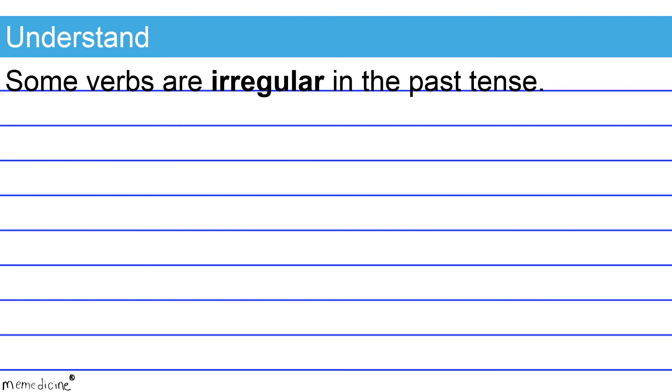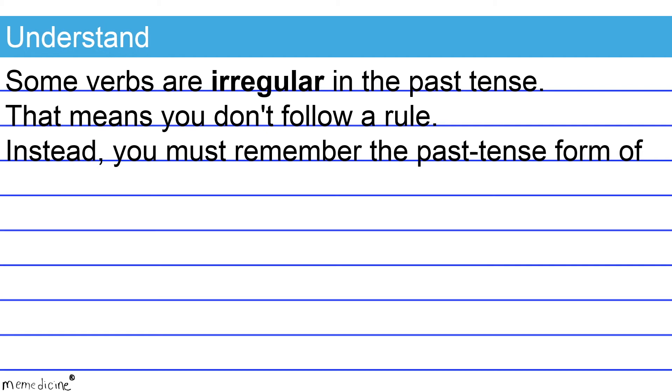Some verbs are irregular in the past tense. That means you don't follow a rule. Instead, you must remember the past tense form of the verb. Check out this example.